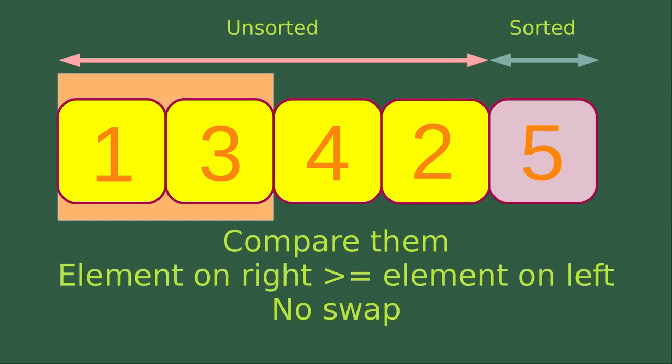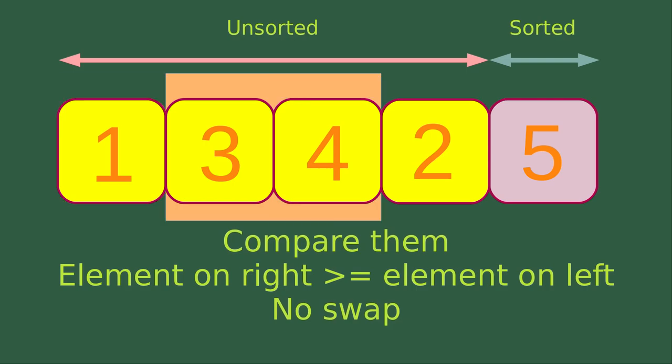I would start with the first two elements in the unsorted list and compare them. The element on the right-hand side is larger than or equal to the element on the left-hand side, so no swap is needed. Then I move my window to the other two adjacent elements. I don't need to swap the two numbers because they still follow the rule that the element on the right-hand side is larger than or equal to the element on the left-hand side.